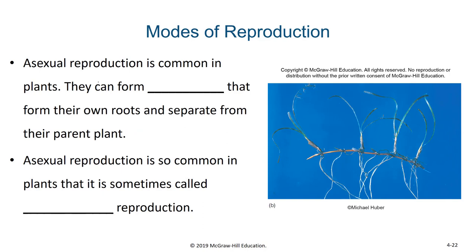Asexual reproduction is actually quite common in plants. They can form runners that form their own roots and separate, and they can even become their own plants. In fact, asexual reproduction is so common in plants that it is sometimes referred to as vegetative reproduction.